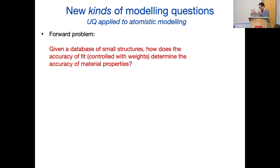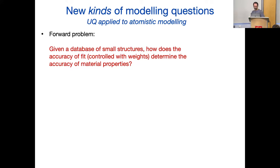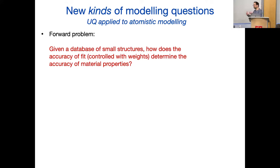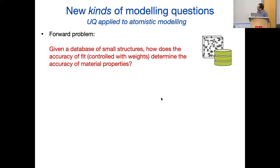Now that for the first time we have controllable accuracy models that can approach the true potential energy surface, a new kind of question occupies our mind: uncertainty quantification applied to atomistic modeling. There's a forward problem: given a database of small structures you can do quantum calculations for, how does the pointwise accuracy of the fit determine the accuracy of a property you want to compute — the melting point, surface energy, vacancy formation energy? Nobody knows, because people didn't have models that could be converged.